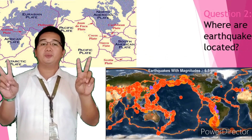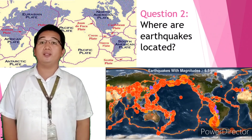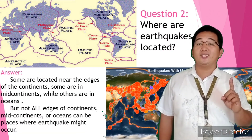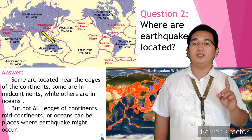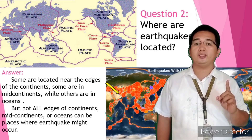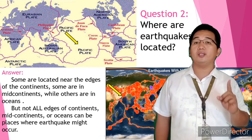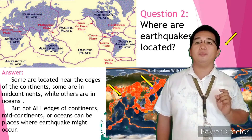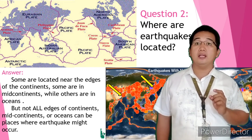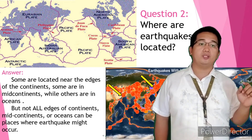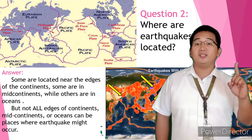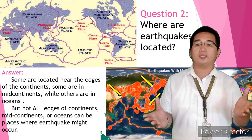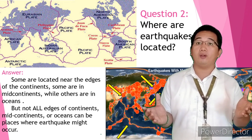Question number two: where are earthquakes located? Some are located near the edges of the continents, some in the mid-continents, while others are in the ocean, like the Mid-Atlantic Ocean and the Atlantic Ocean. But not all edges of continents, mid-continents, or oceans are places where earthquakes might occur.